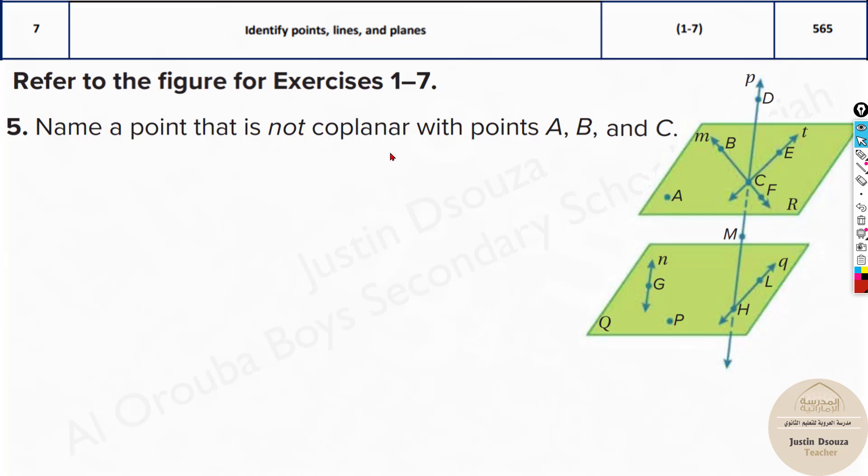Name a point that is not coplanar with point A, B, C. Coplanar means it must be in the same plane. These all points over here A, B, C are in this plane. Non-coplanar would be in another plane. I cannot choose D and M because they are not exactly in the plane, they are in between. Let us say this is in between, this is above. Whereas, I can see the point P is in plane Q. I would choose point P over here.